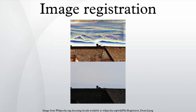Image registration or image alignment algorithms can be classified into intensity-based and feature-based. One of the images is referred to as the reference or source and the others are respectively referred to as the target, sensed or subject images. Image registration involves spatially registering the target image to align with the reference image. Intensity-based methods compare intensity patterns in images via correlation metrics, while feature-based methods find correspondence between image features such as points, lines, and contours. Intensity-based methods register entire images or sub-images; if sub-images are registered, centers of corresponding sub-images are treated as corresponding feature points.